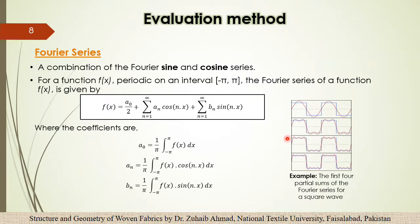How does this work? You can see the example. Here we can see the first four partial sums of the Fourier series for a square wave. We have a square wave, and when we will apply the Fourier sums.